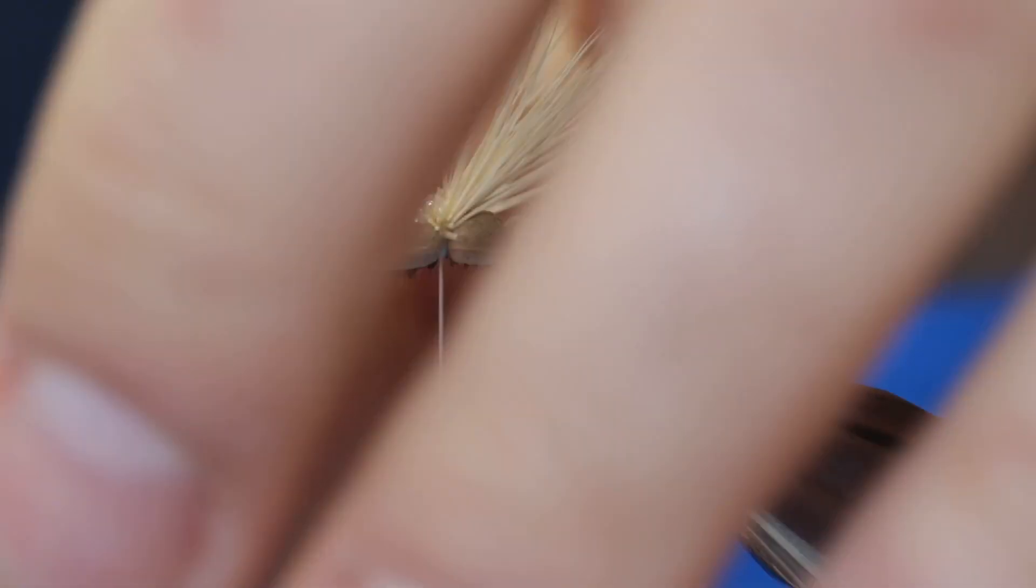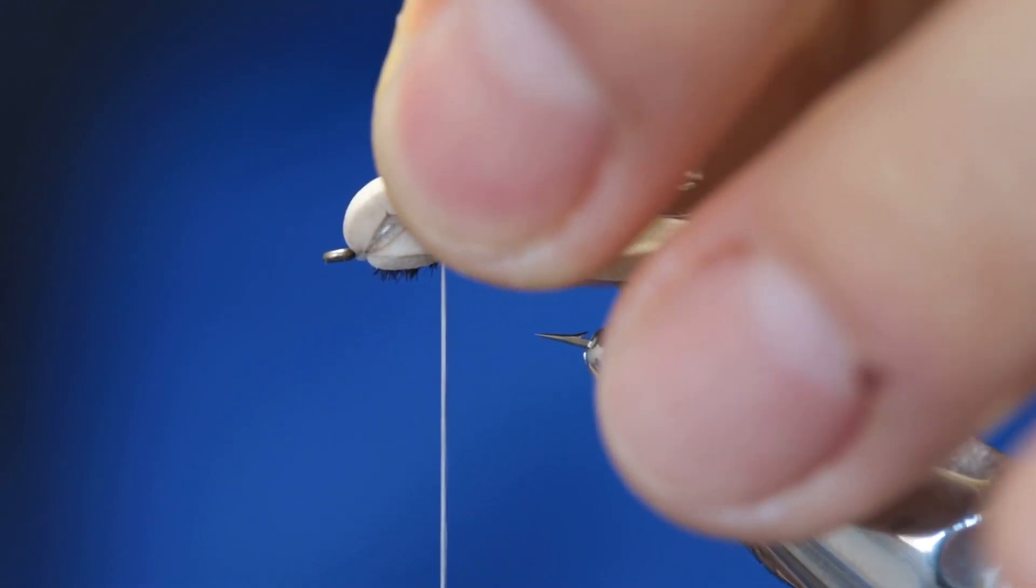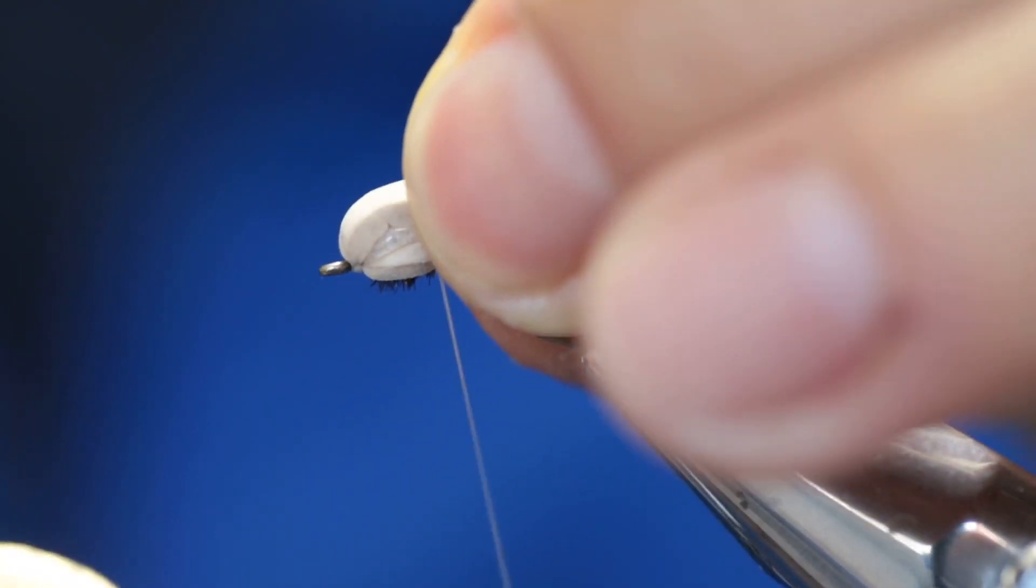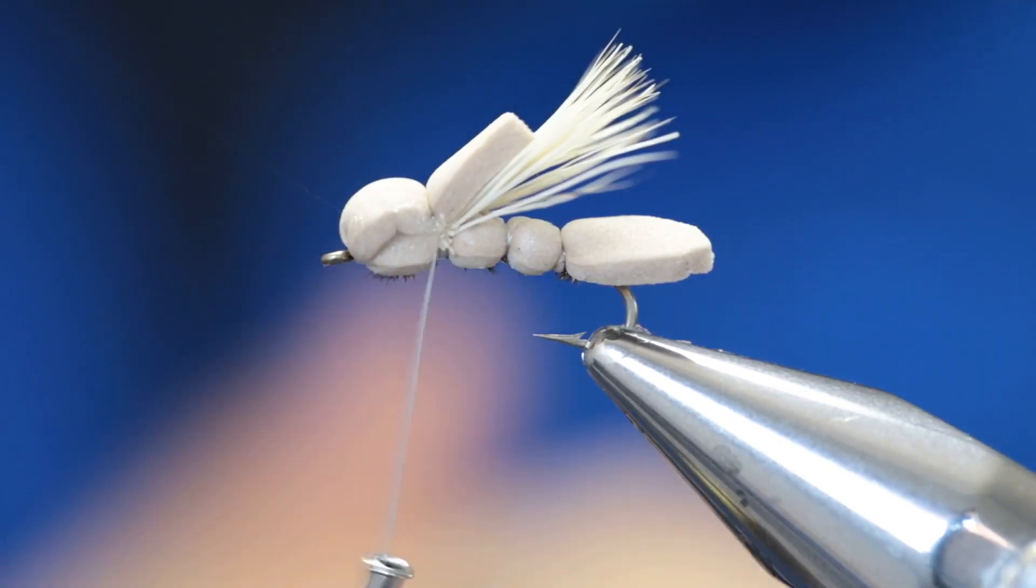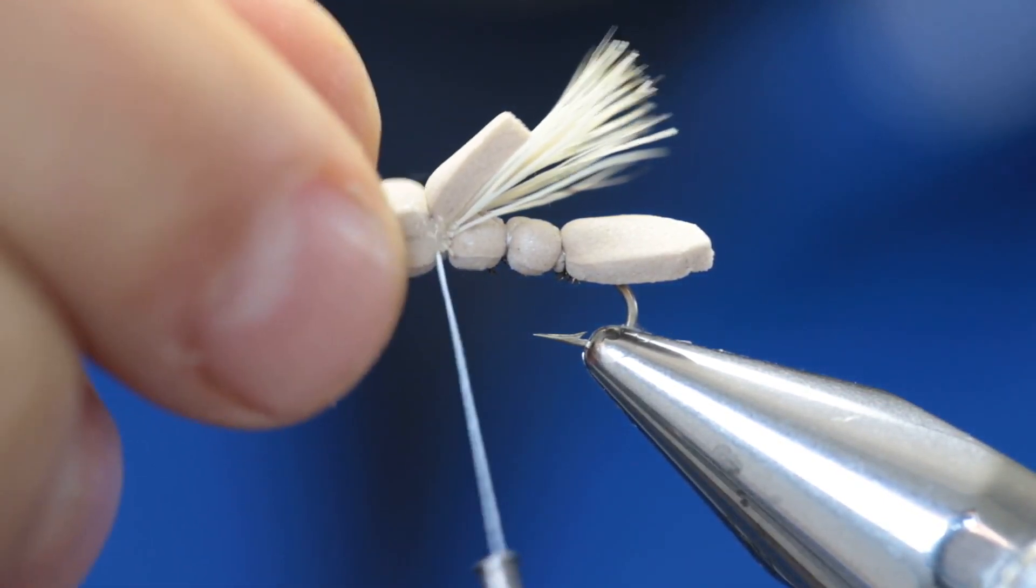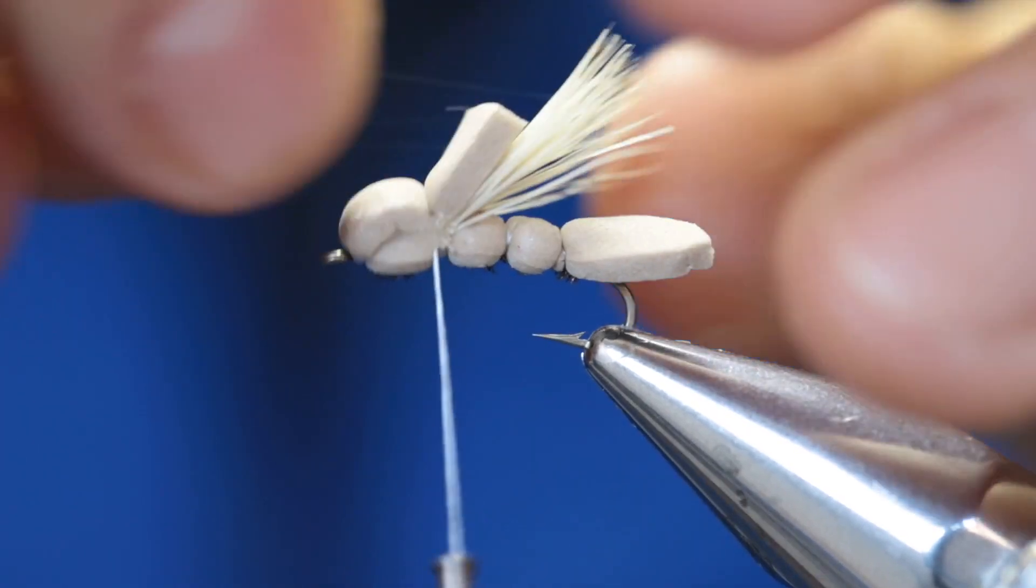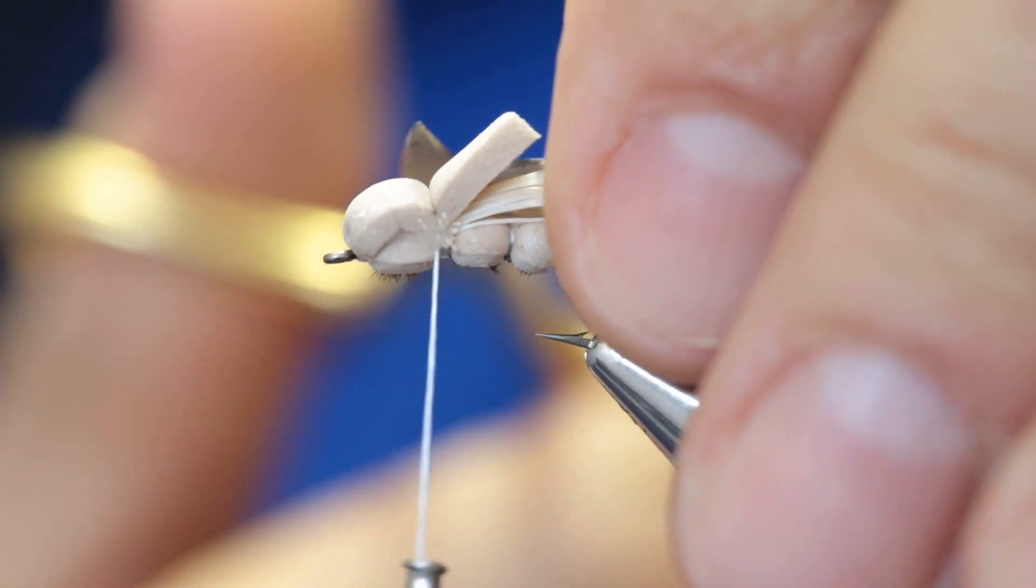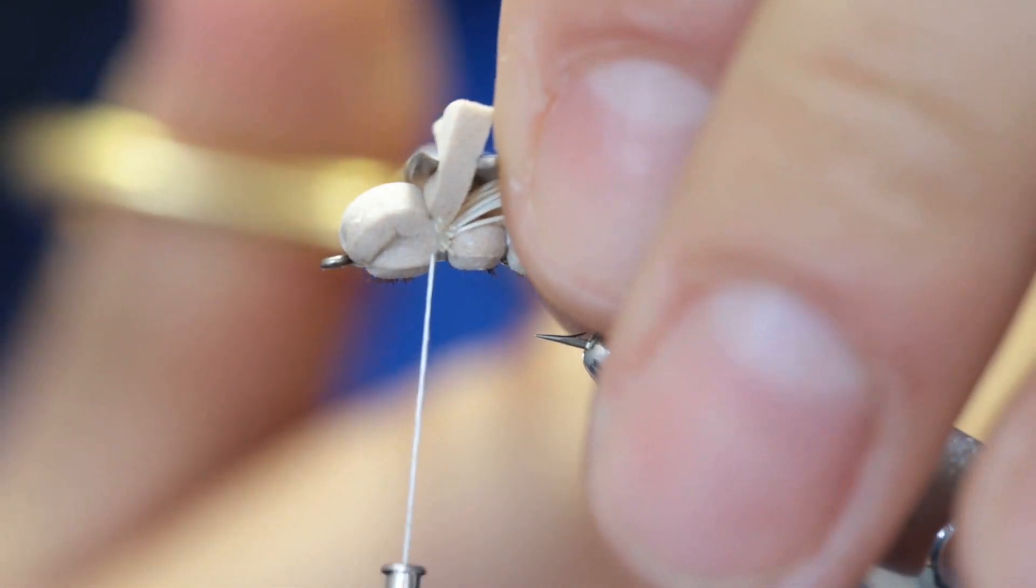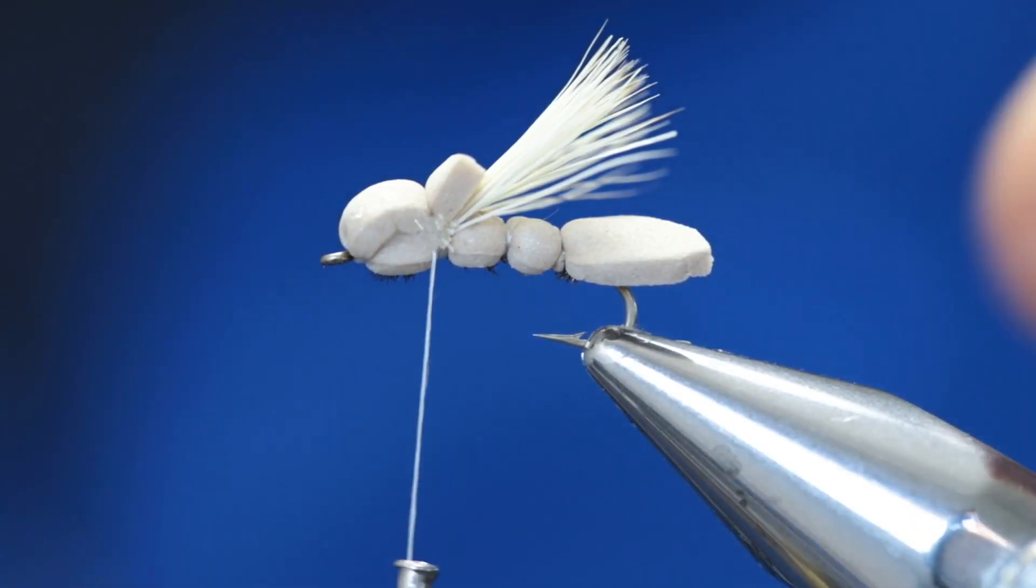Now fold over the foam and secure it. Cut the excess foam. You want a little bit left over just like that. That's all you want.